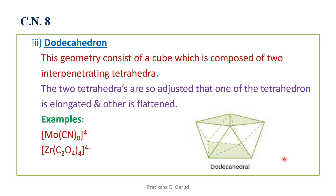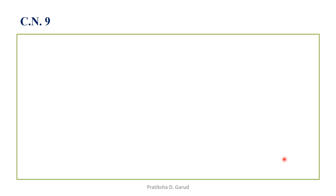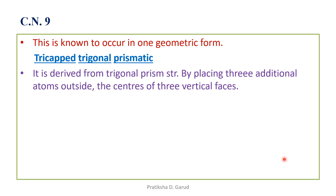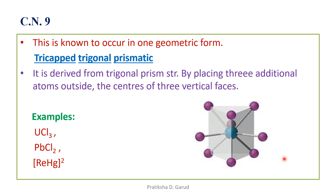Coordination number nine is known to occur in only one geometric form: the tricapped trigonal prismatic. It is derived from the trigonal prism structure by placing three additional atoms outside the centers of the three vertical rectangular faces. Examples are UCl₃, PbCl₂, and ReH₉²⁻. The structure shows a trigonal prism with three additional atoms at the centers of the faces.